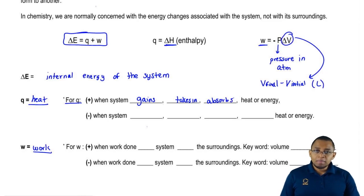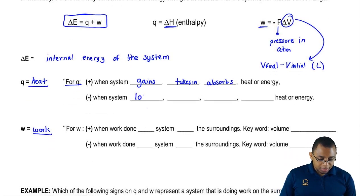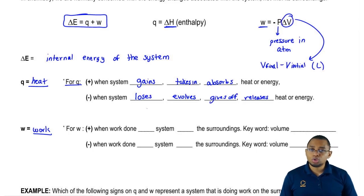We say that Q can be negative when we say the system loses, evolves, gives off, or releases heat or energy to the surroundings.